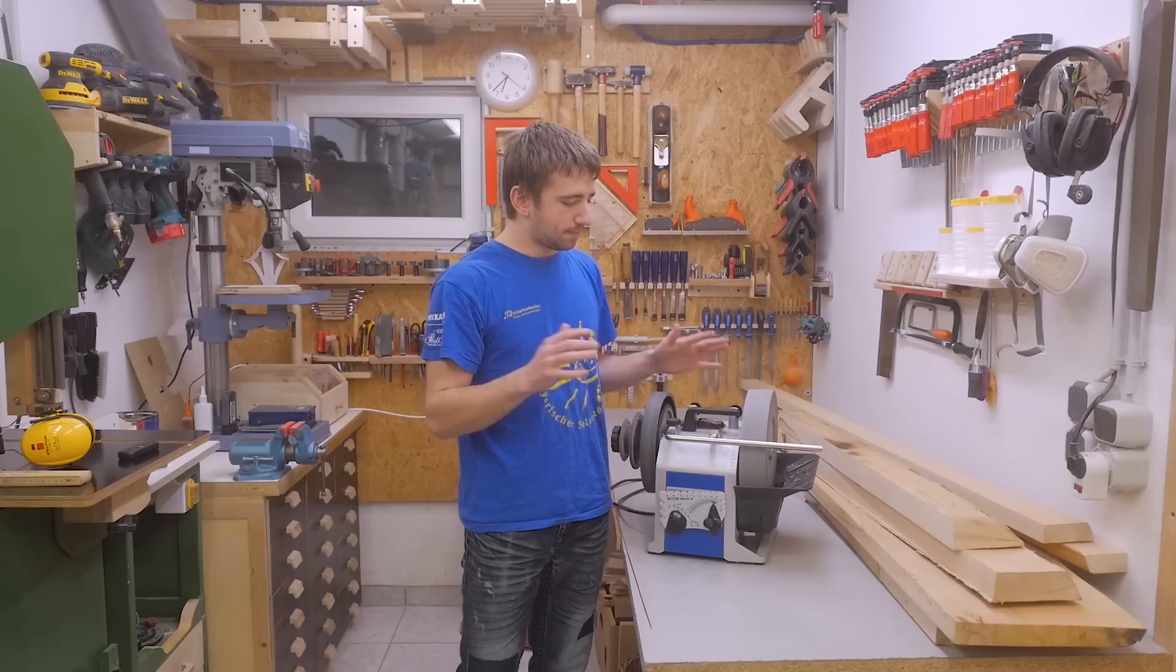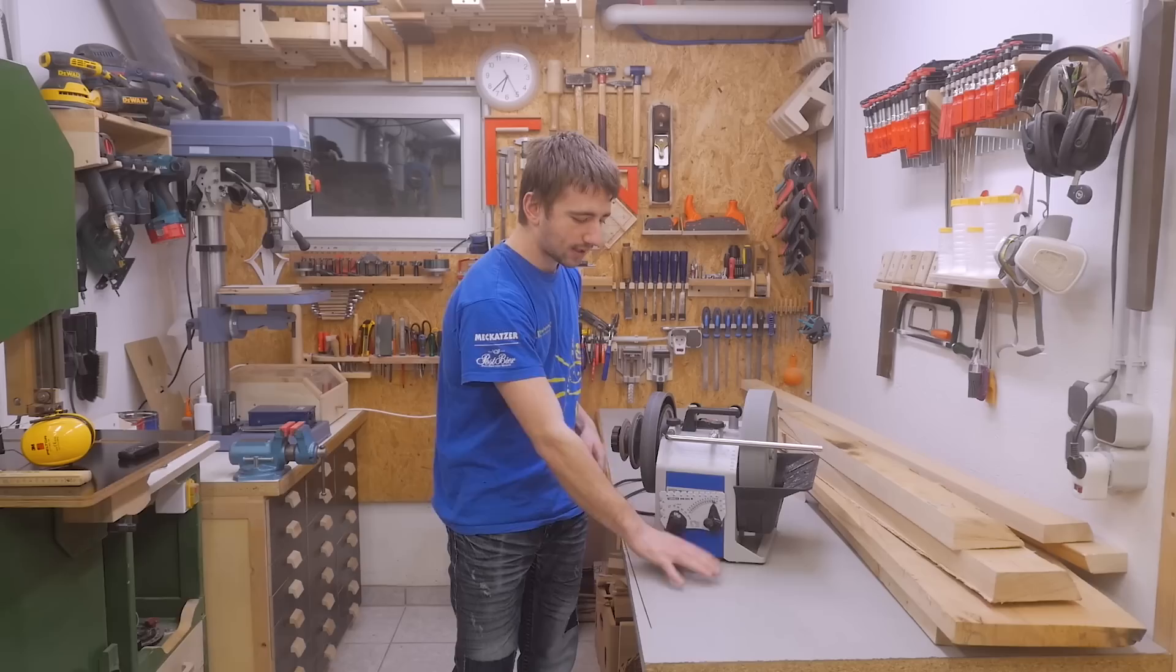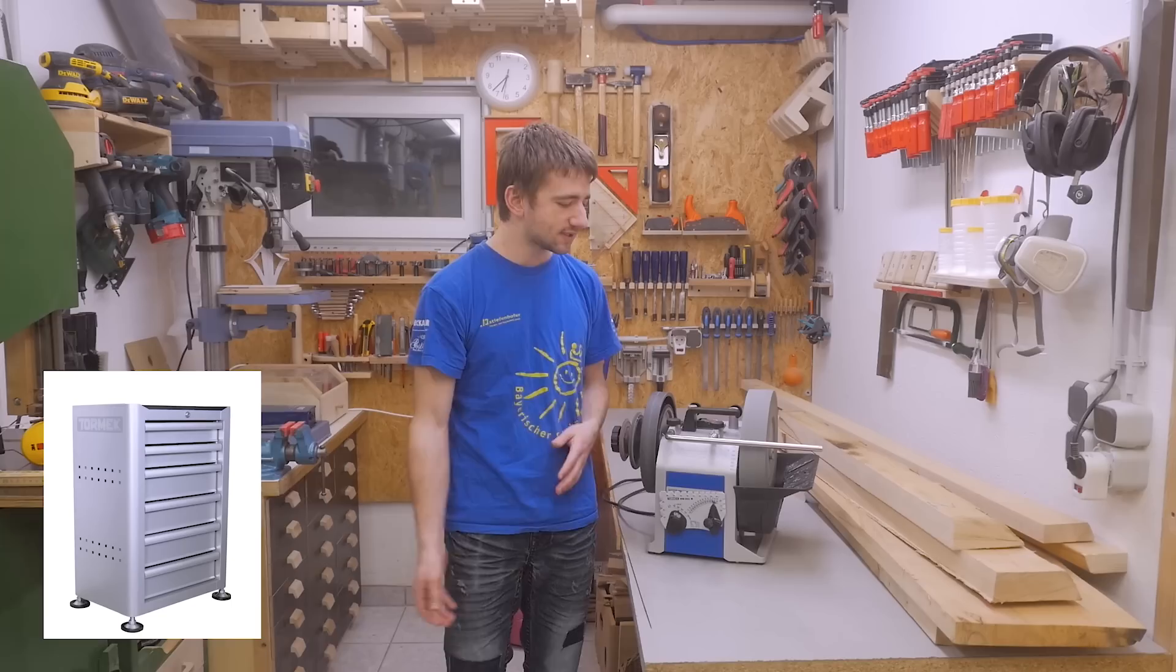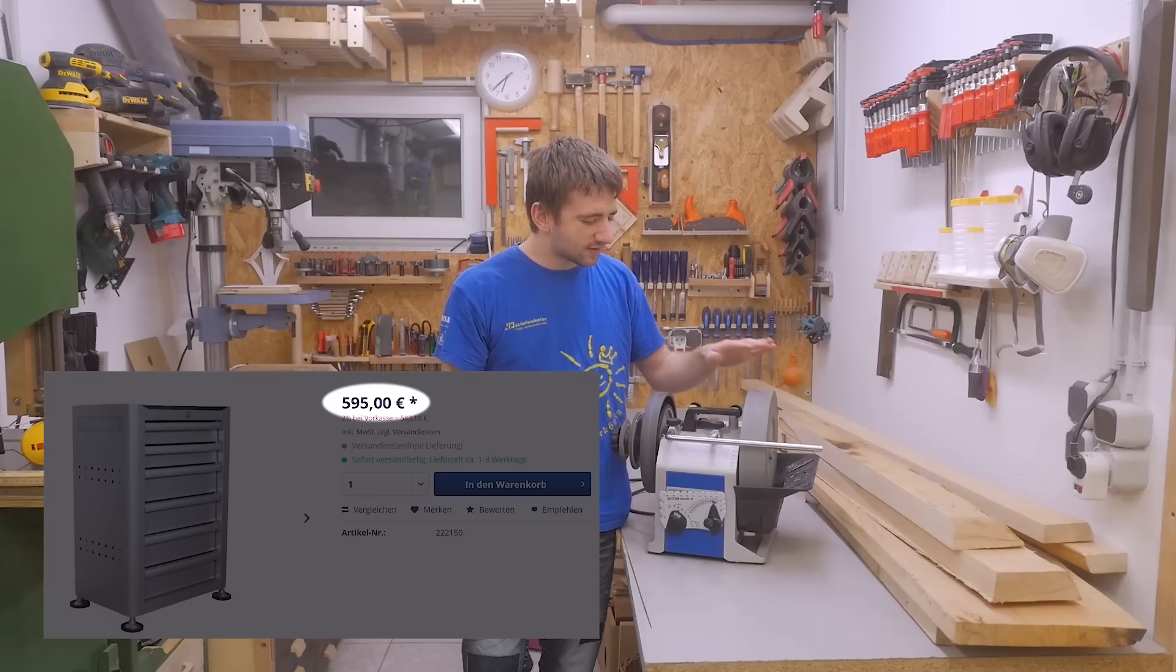It came in the set and using it is great, but for using it optimally it should be at quite a low height, much lower than my workbench. Of course, Tormek sells a nice little stand like a cabinet with drawers for the accessories, the machine sitting on top. That's all perfect, but this little stand is actually more expensive than the machine itself, which is quite ridiculous.